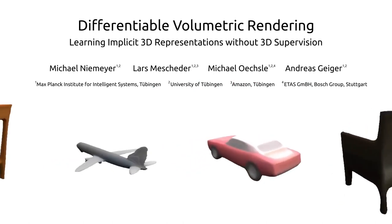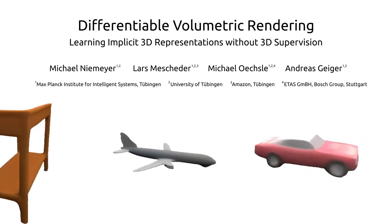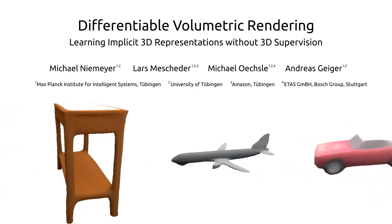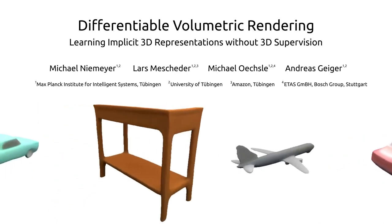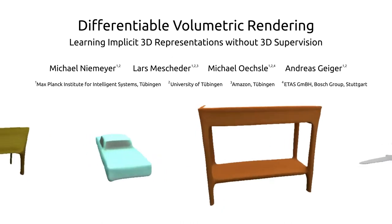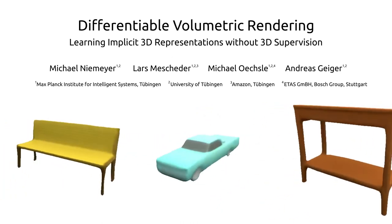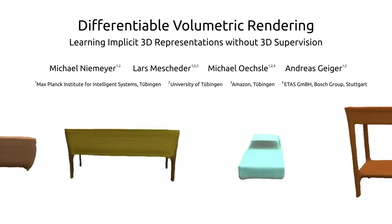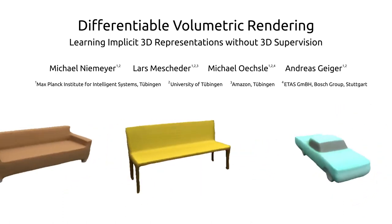Hi, I'm Michael from the Max Planck Institute for Intelligent Systems and I'm excited to present Differentiable Volumetric Rendering, a novel method for learning implicit 3D representations without 3D supervision. In DVR, we represent the shape and texture of an object with an implicit neural representation.